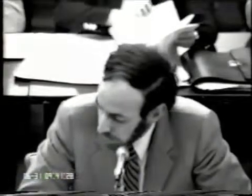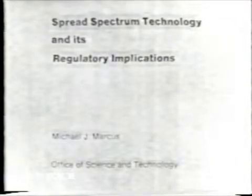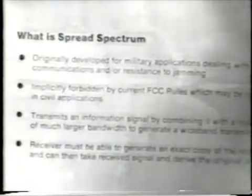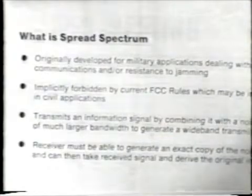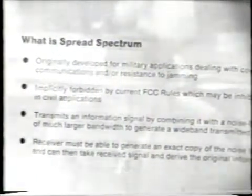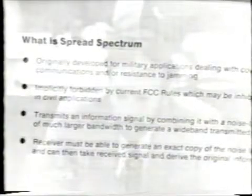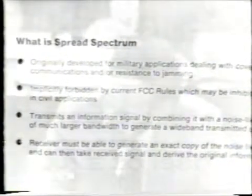Spread spectrum was originally developed for military applications where there was an interest in either covert communications or resistance to jamming. Because our current rules emphasize specific enumerations of allowed modulation types, we implicitly forbid this new modulation type and we feel this prohibition may be inhibiting R&D in the civil sector, as may be noted by the fact that in the past five years we've only received five applications under the Experimental Radio Service for spread spectrum like technologies. Spread spectrum systems basically work by combining an information signal with a much wider bandwidth noise-like signal and transmitting the combination. At the receiver, we must have an exact copy of the noise-like signal, and given this exact copy, we're able to combine it with the transmitted signal to derive the original information that we desire to send.